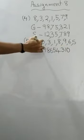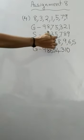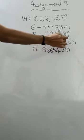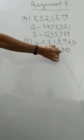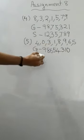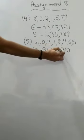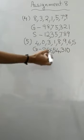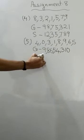So how many digits? 1, 2, 3, 4, 5, 6, 7, 8 — so 8 digits. You will put the commas here, here, and here.